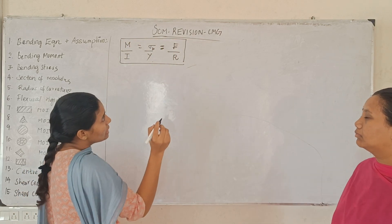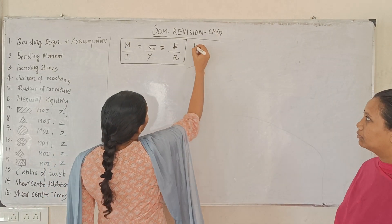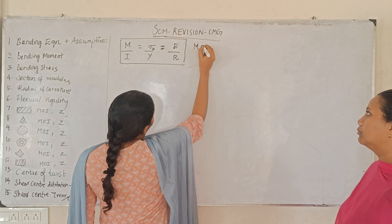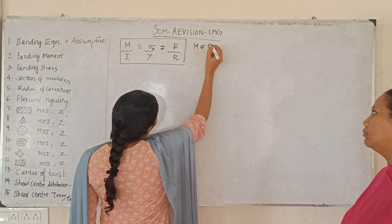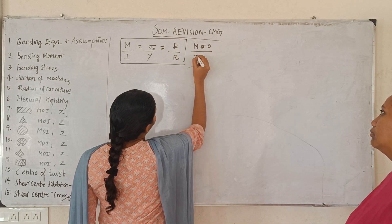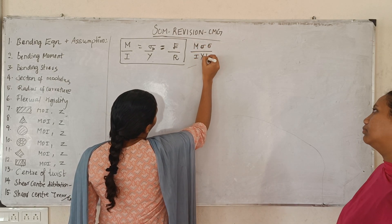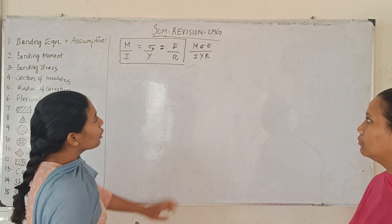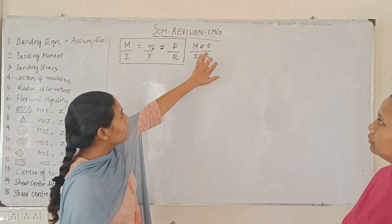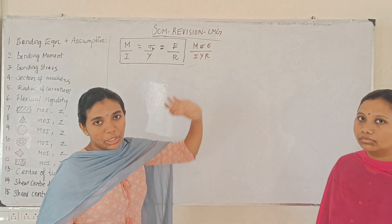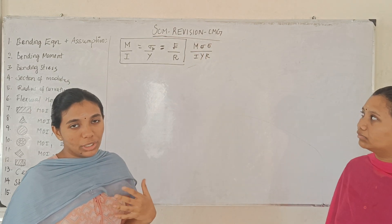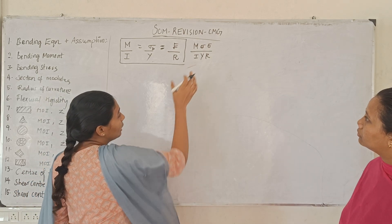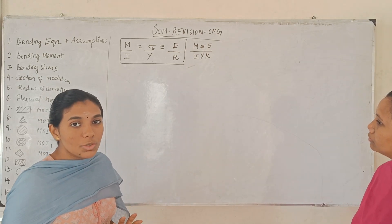Using the bending equation: M divided by I equals sigma divided by y. So the terms we need are M, sigma, y, and I. So where the terms are marked.